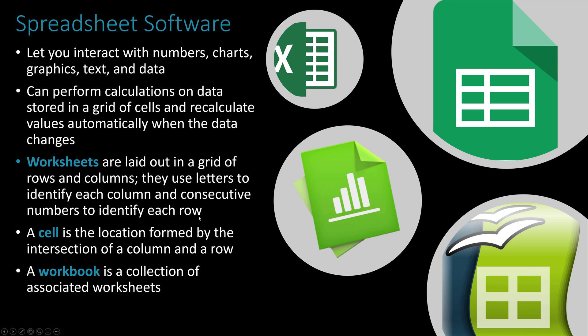Moving on to spreadsheets — when we talk about spreadsheets, we usually think about numbers. A worksheet is one sheet of numbers that pertain to some topic. When we put a bunch of worksheets together, we create a workbook. For example, a sheet could represent a month and a workbook could represent a year. A cell is a single instance of a value — textual, numerical, or graphical — within the sheet.